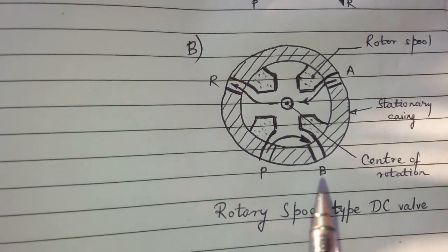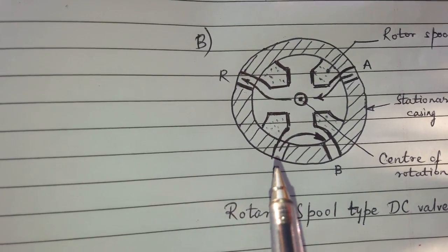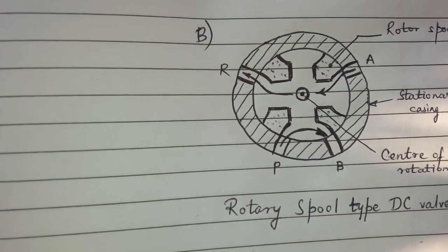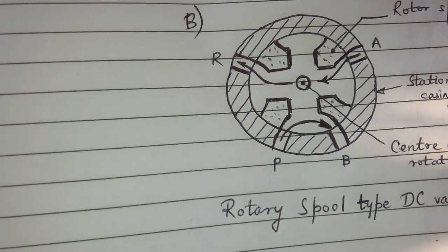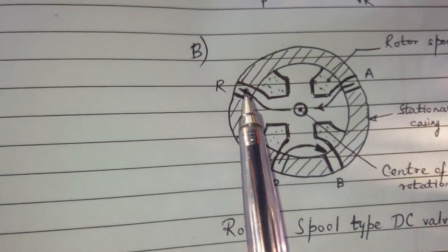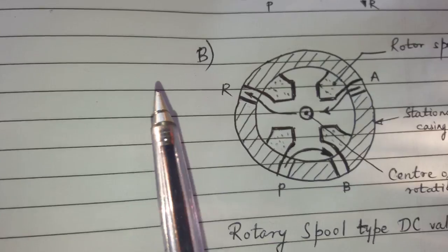Port P is the pressure port through which pressurized oil is coming in the valve. R is the port through which used oil is returning to the oil tank.